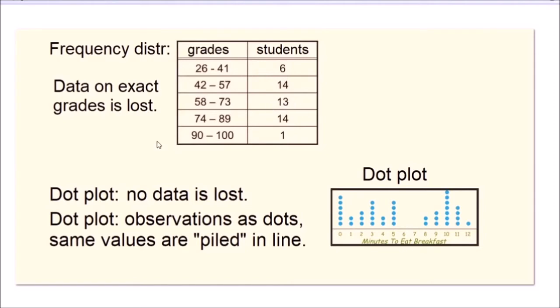Contrary to that, dot plot, while it is also a way to summarize data, with a dot plot there is no data loss. No exact values of individual observations are lost in a dot plot.